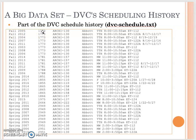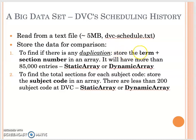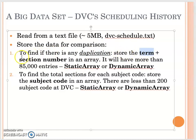When you see a section for the first time, we don't consider it a duplicate. However, after parsing all the lines, if you find another entry with the same term and section number, then we consider it a duplicate. That's the definition of duplication in our context.